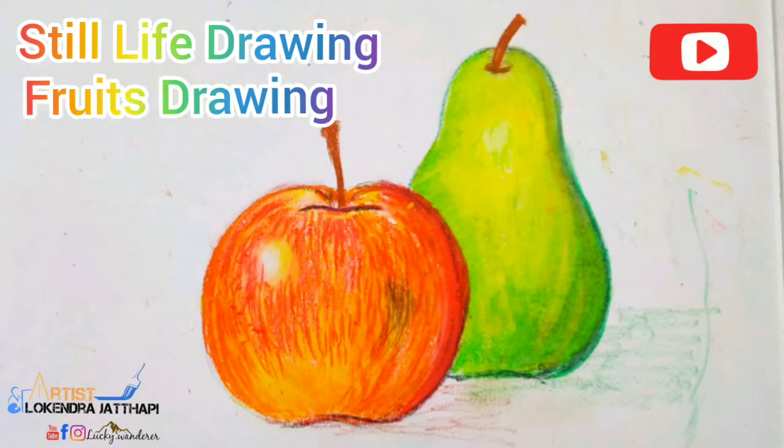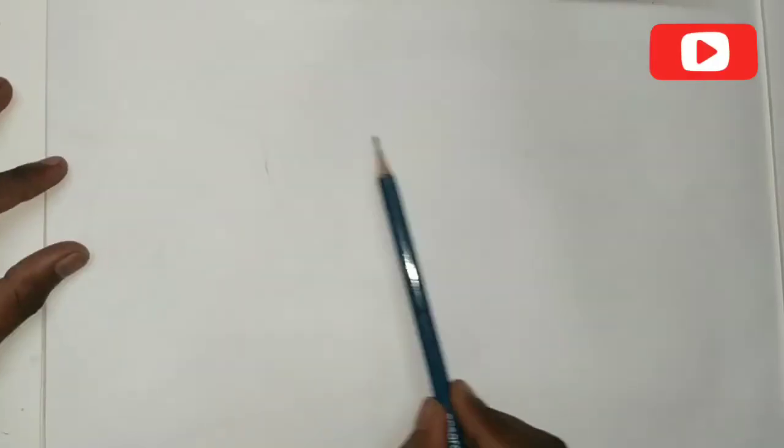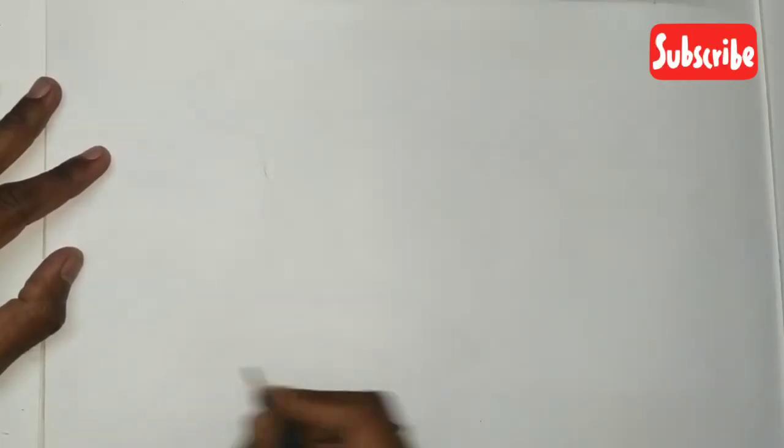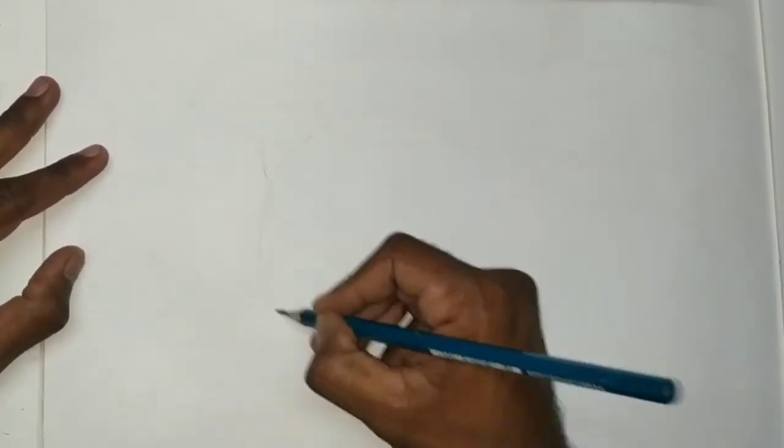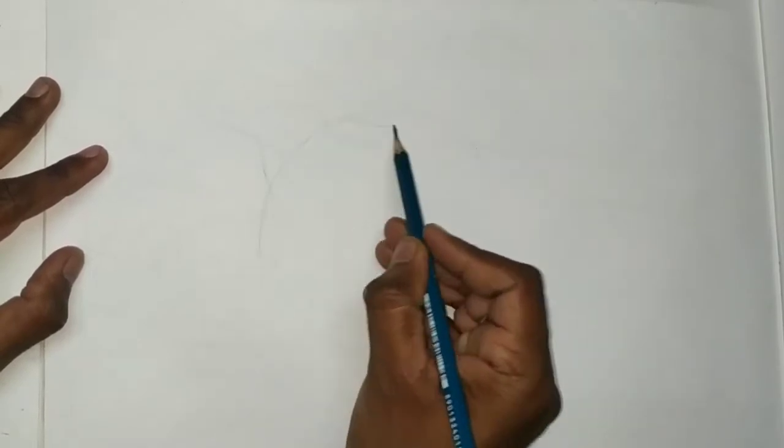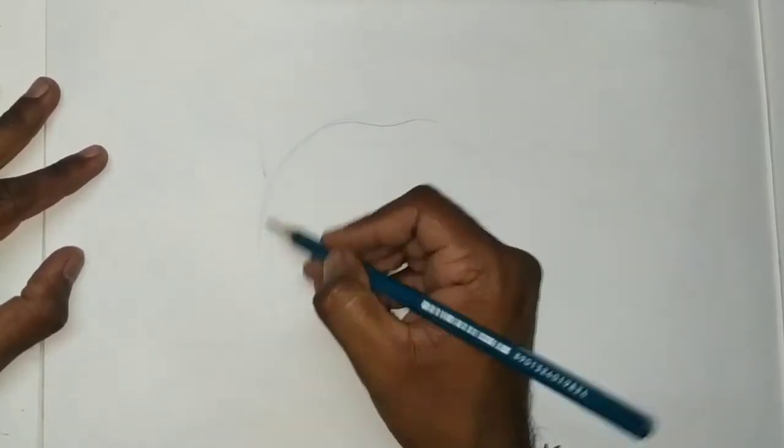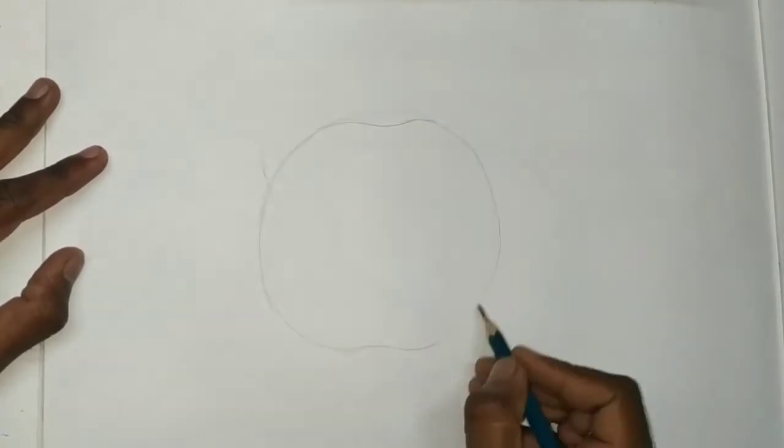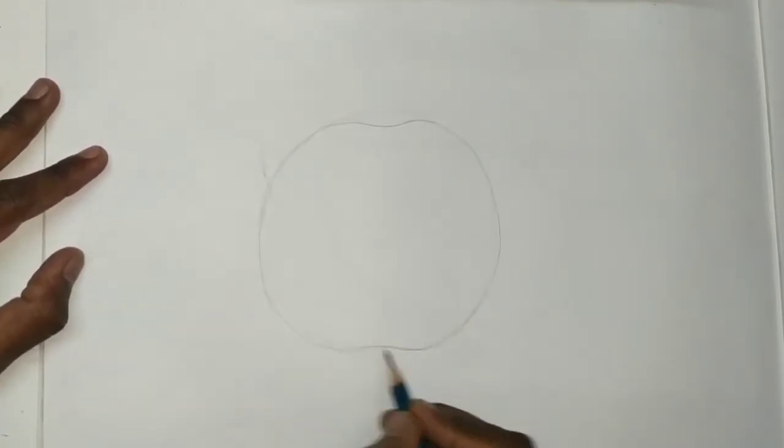In this video we will cover two topics: still life and fruit drawing. At first we will draw one apple with help of circle and curves.